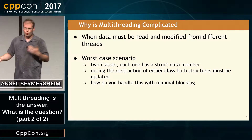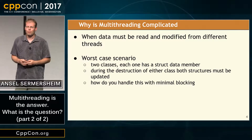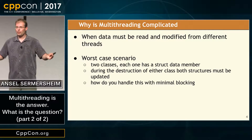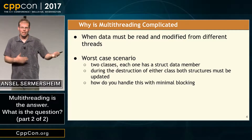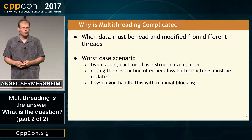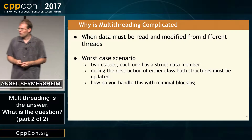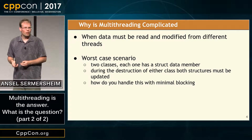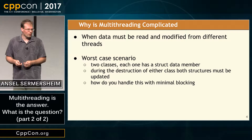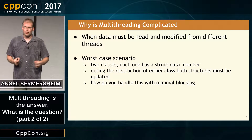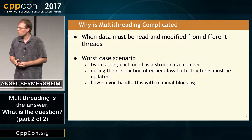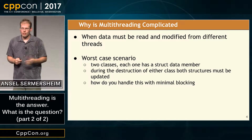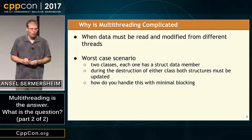If you have two separate classes, each of them have data, and in each of the destructors of these classes you need to update data in the other object. Those of you who have done some multi-threading will go: this doesn't sound so happy, because I can see deadlocks on the horizon and all sorts of places for this to go horrifically wrong. So how do we handle this with minimal blocking? This is where I started the design of LibGuarded — this is exactly the problem it was built to solve.